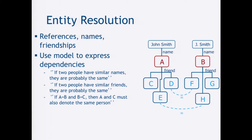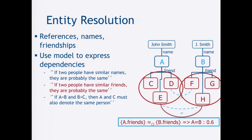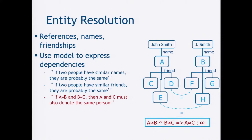In entity resolution, collective reasoning means: when figuring out if A and B are the same entity, I look at string similarity of their names, but more interestingly I can use this recursive definition — if their friends are similar, they're more likely to be the same, and if the friends of their friends are similar, and so on. Additionally, entity resolution often requires transitive closure: if A and B are the same, and B and C are the same, then A and C should be the same. All of this requires more complex reasoning.